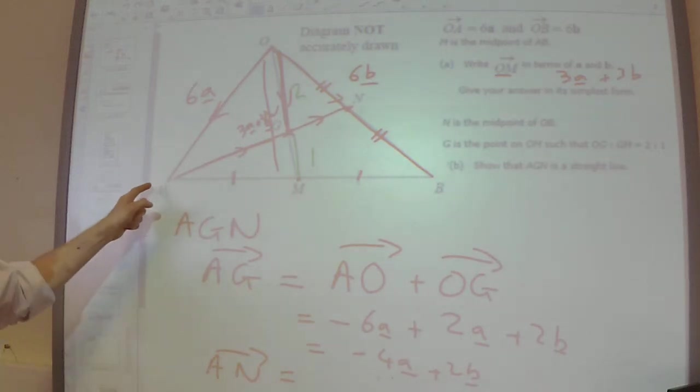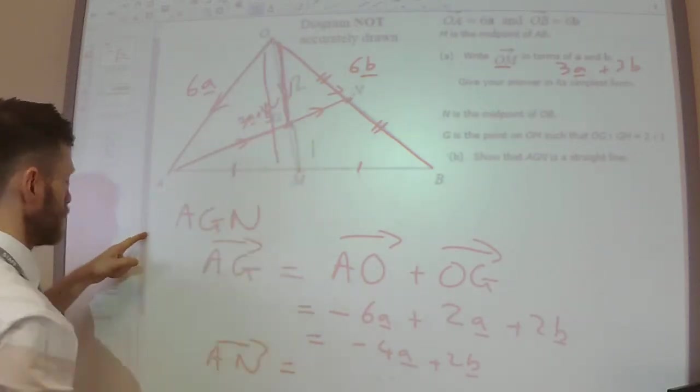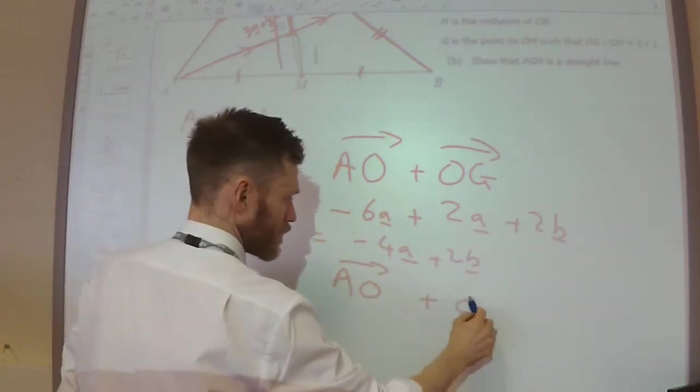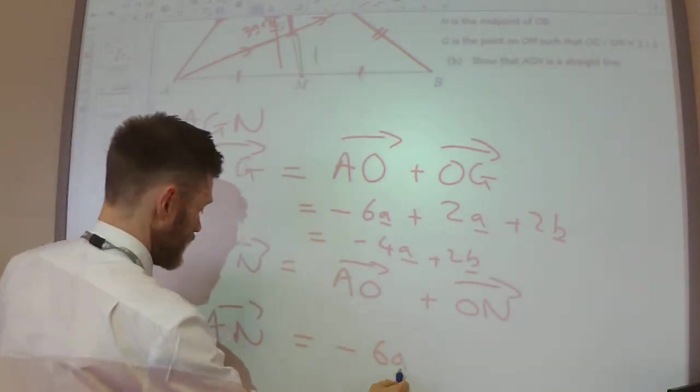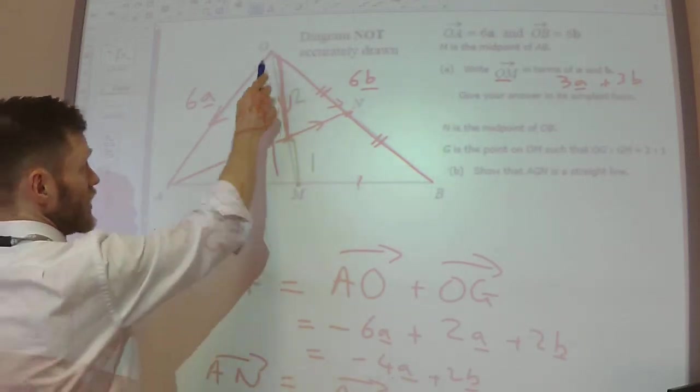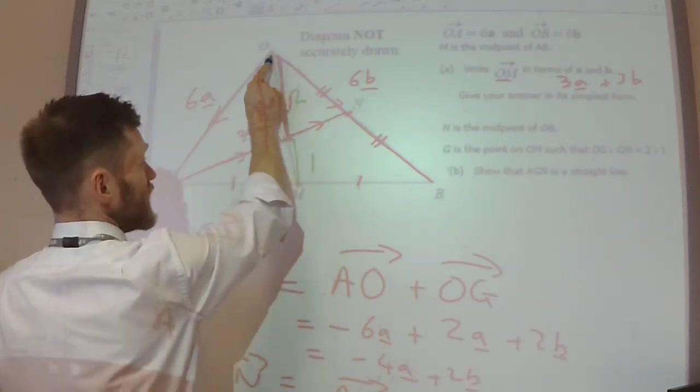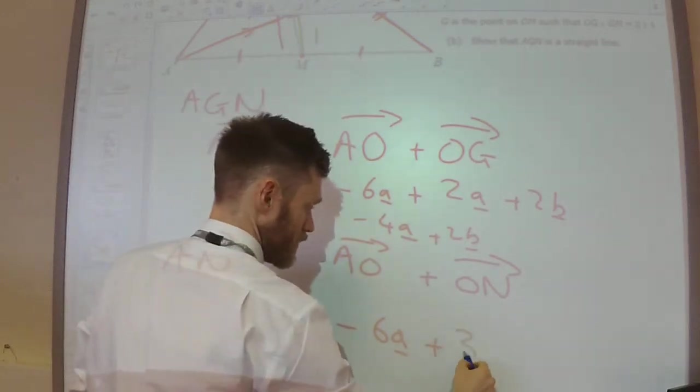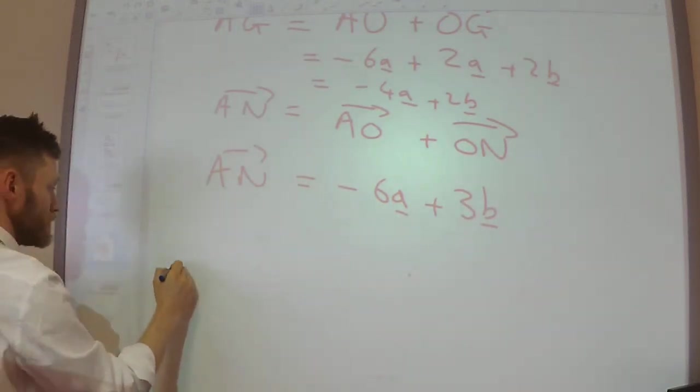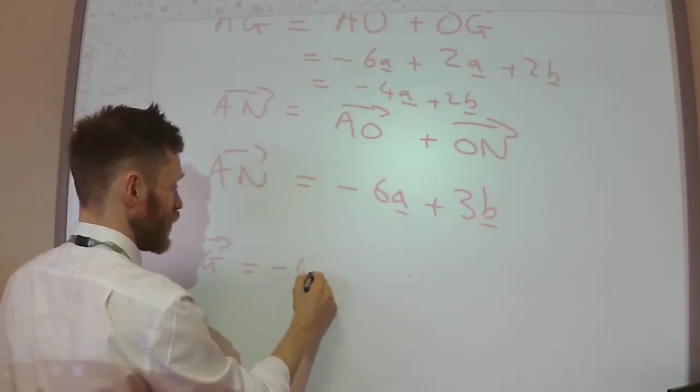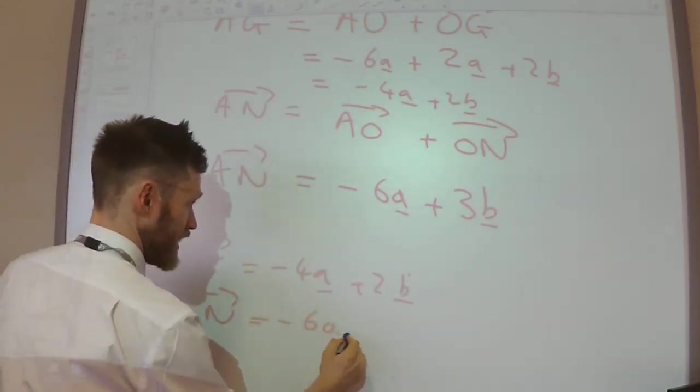Now let's do the vector from A to N. To do that, I'm going to go from A to O and then O to N. Well, I know that's the midpoint of O to B. So if the whole thing is 6b, then O to N is just going to be 3b. So we have these two vectors. AG is minus 4a plus 2b. And AN is minus 6a plus 3b.